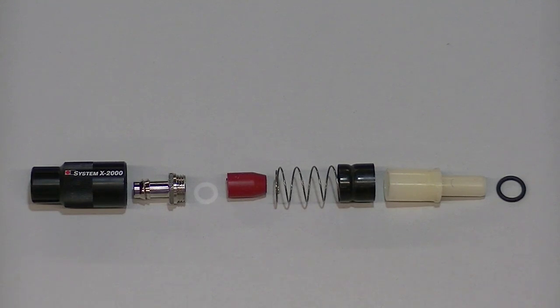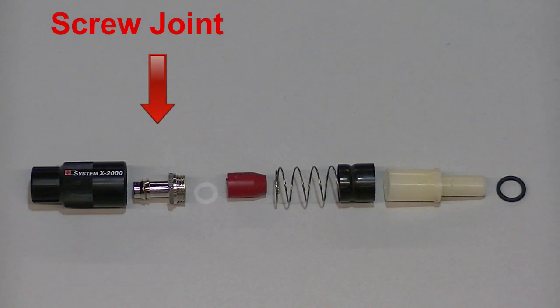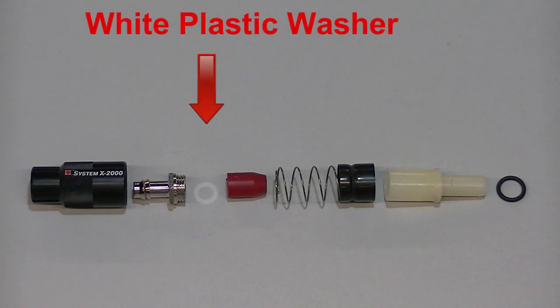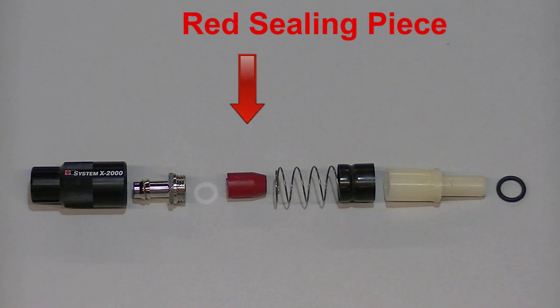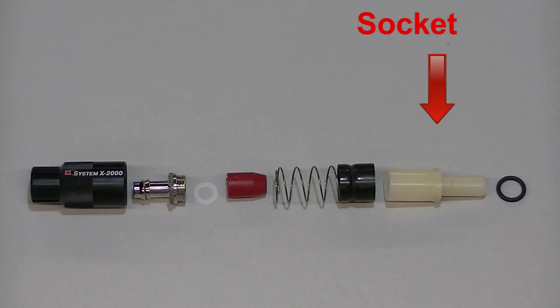The parts needed are, from left to right, one X2000 housing, one screw joint, one white plastic washer, one red sealing piece, one ground insert, one socket, and one rubber O-ring.